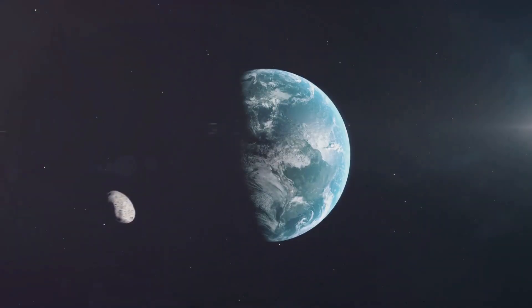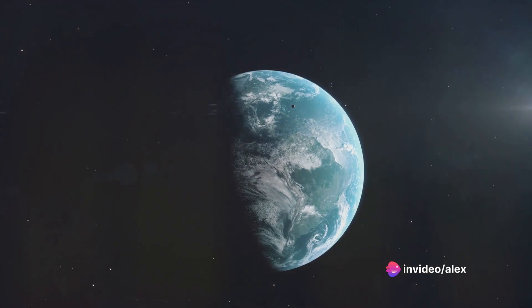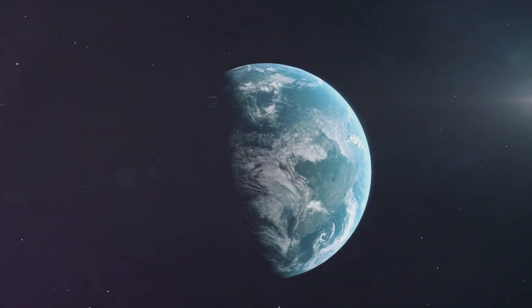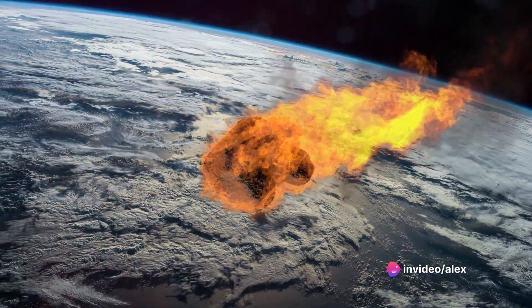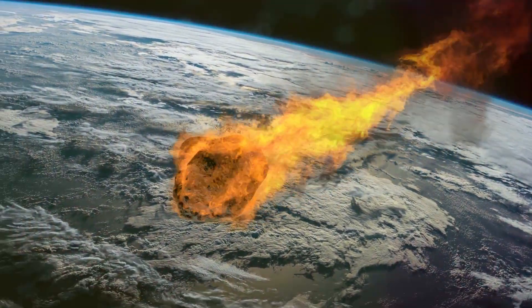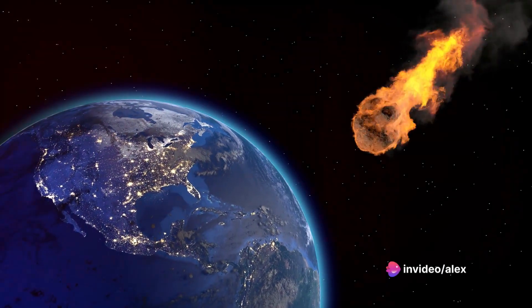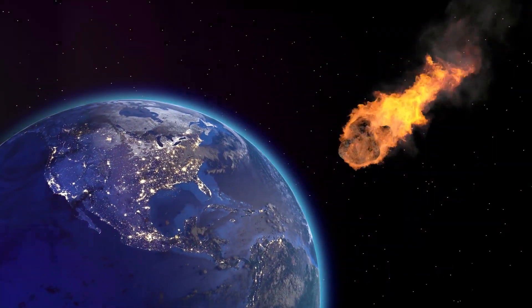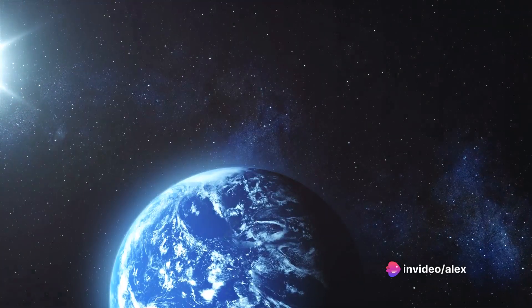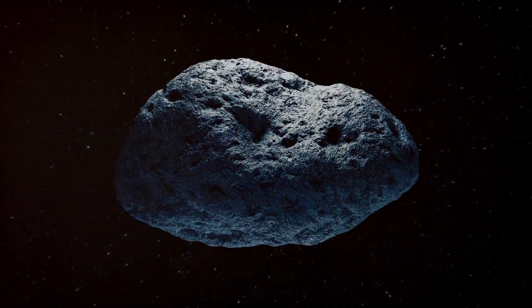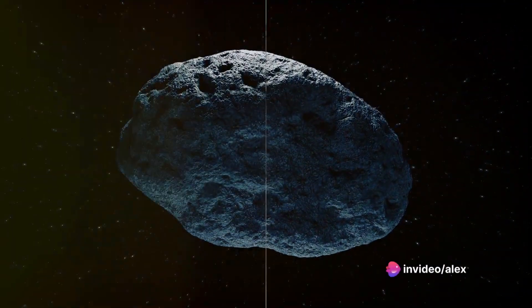Lastly, let's compare it to the Chicxulub impactor, the asteroid that is believed to have caused the extinction of the dinosaurs. The Chicxulub impactor was estimated to have released energy equivalent to 100 billion tons of TNT. While this is 20 times more than our one-pound asteroid, keep in mind that the Chicxulub impactor was about six miles in diameter, while our asteroid is a mere one pound. Even at a mere one pound, the asteroid's impact carries more energy than some of the most devastating events in Earth's history.